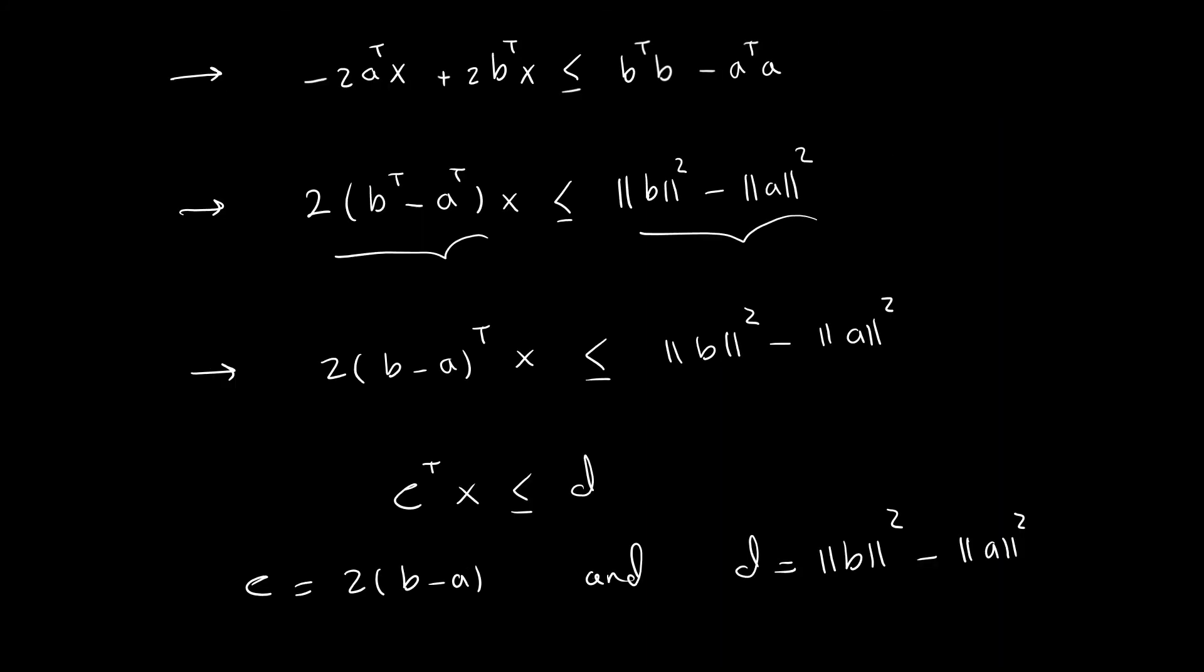Okay, we are left with this inequality and we know from the previous page I can rewrite b transpose b as norm squared of b. Actually this is two-norm squared of b, and we have two-norm squared of a on the left hand side.